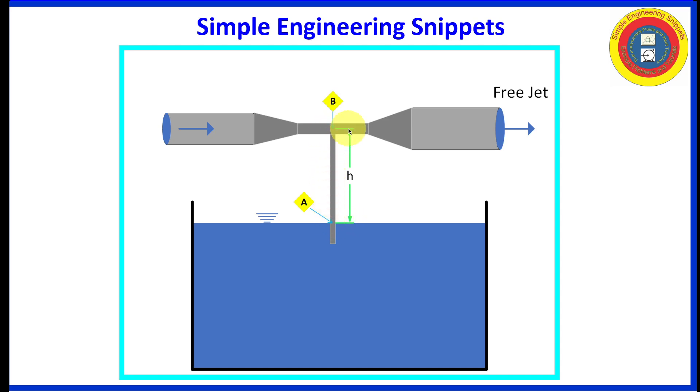For point Bravo, let's pick the center line of our throat, the eductor throat. And for point Charlie, let's select the outlet, which is a free jet. Keep in mind that alpha is at atmospheric and Charlie is at atmospheric. We don't know the pressure at Bravo.